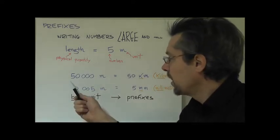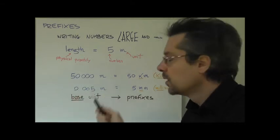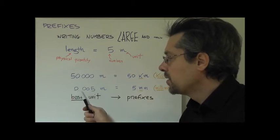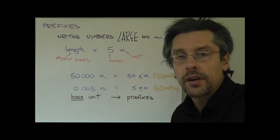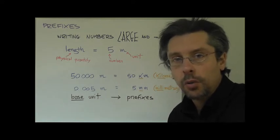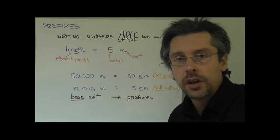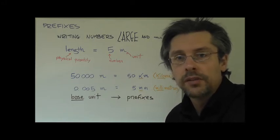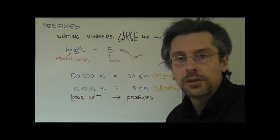Now what happens if the number that you have to write is very big or very small? For instance, what if I have a number like 50,000 meters or a number like 0.005 meters? Now in this case we have two choices. One of them is to use standard or scientific notation which will be the object of our next lesson or instead we can use prefixes.